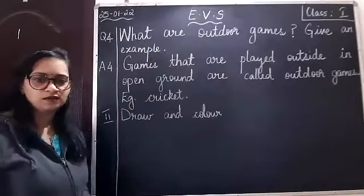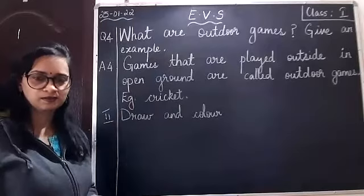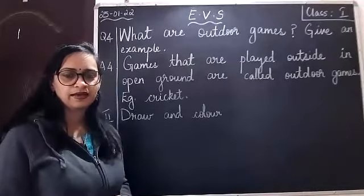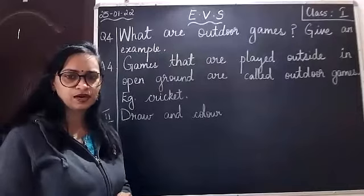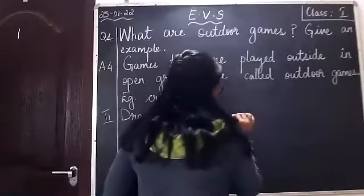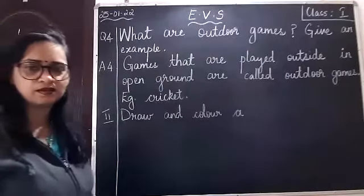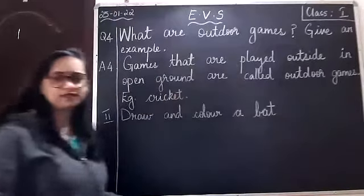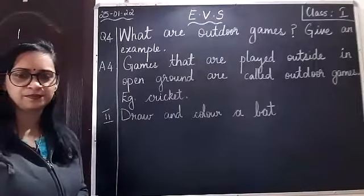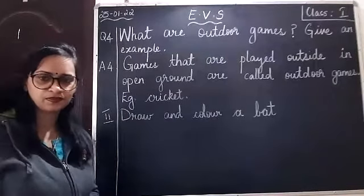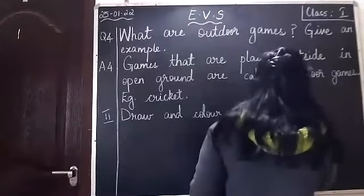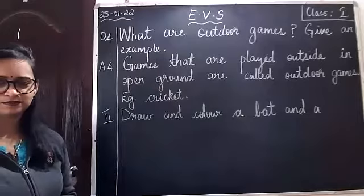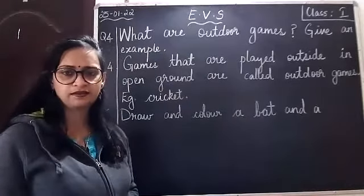C-O-L-O-U-R. Color. Leave a finger space, write down A. Leave a finger space, write down B-A-T. Bat. Leave a finger space, write down A-N-D. And. Leave a finger space, write A.